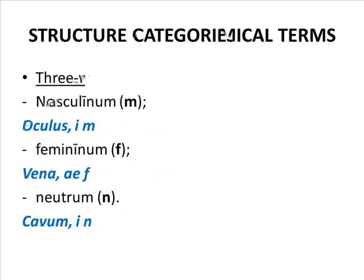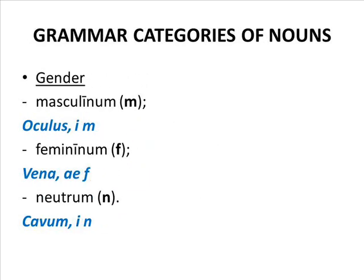There are three genders in Latin: masculine, feminine, and neutral. Latin nouns always have only a grammar gender, which is determined by the ending, but what is more significant, by gender signs too.